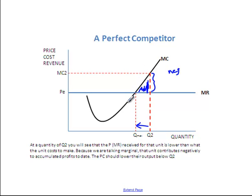Putting all that together, that explains why: if the firm is below Q max they should keep making more units until they get to that point; if they're above Q max they should make fewer units until they get to that point. This makes Q max the profit maximizing position for a perfect competitor, and that's how to apply marginal concepts.